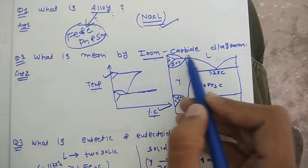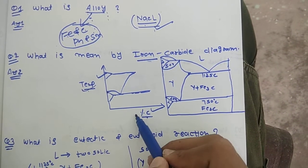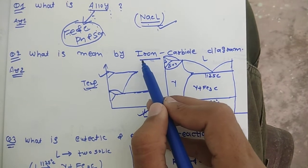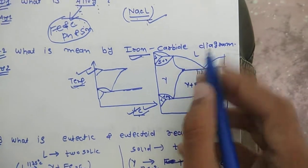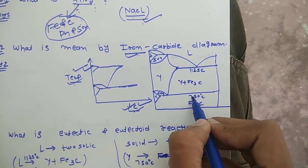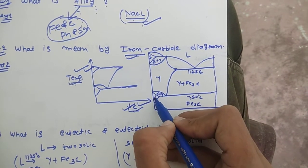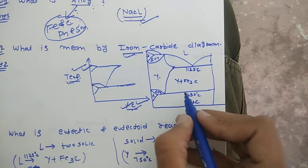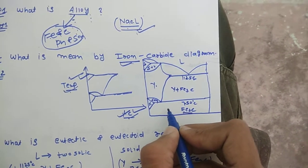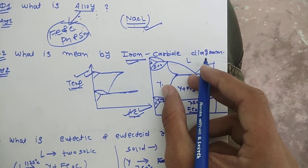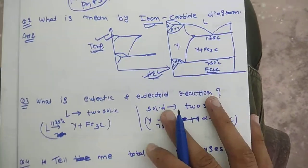The second question is: what is the iron-carbon diagram? The iron-carbon diagram is a graph between temperature and carbon content, in which we obtain different phases of iron by changing either temperature or percentage of carbon. It shows five phases: alpha ferrite, gamma austenite, delta ferrite, and Fe3C (cementite). One more phase is martensite, which the iron-carbon diagram does not show — martensite is shown in the TTT diagram.